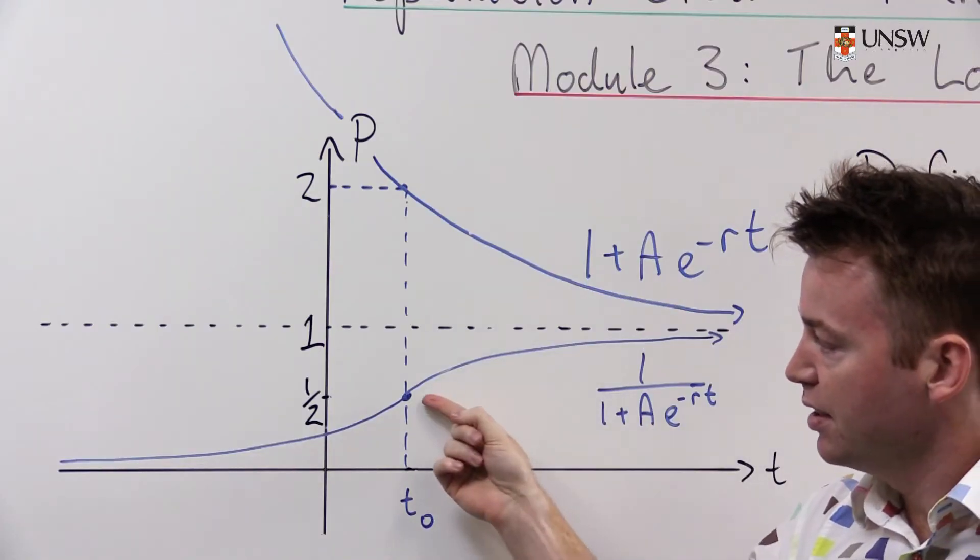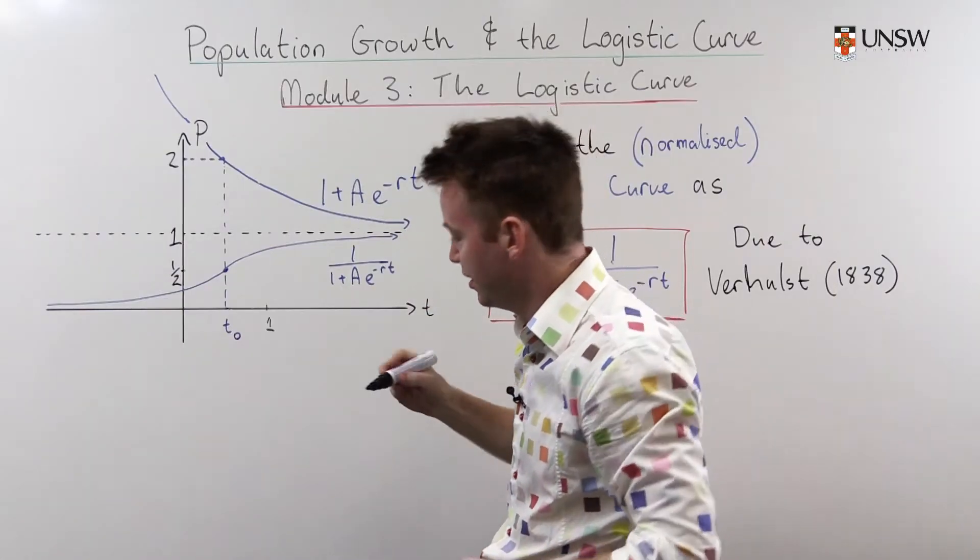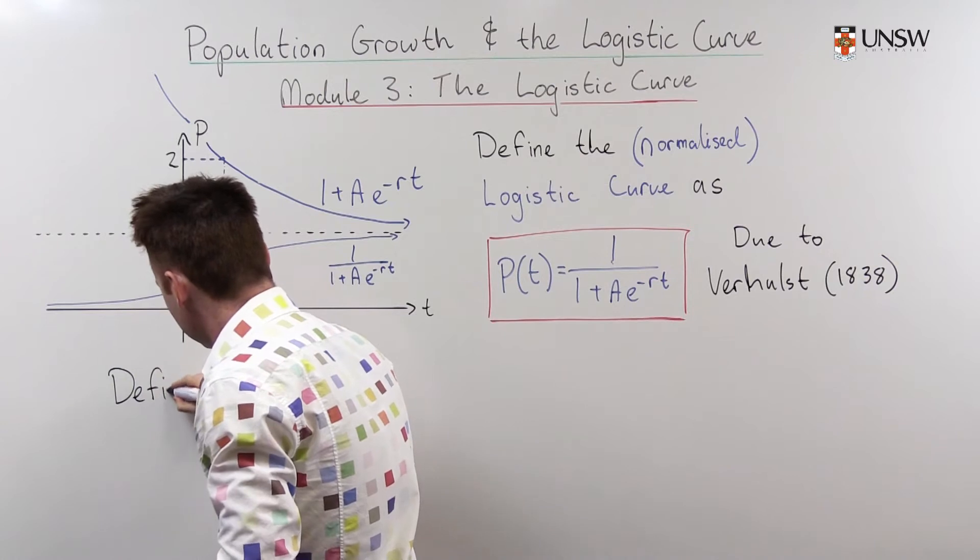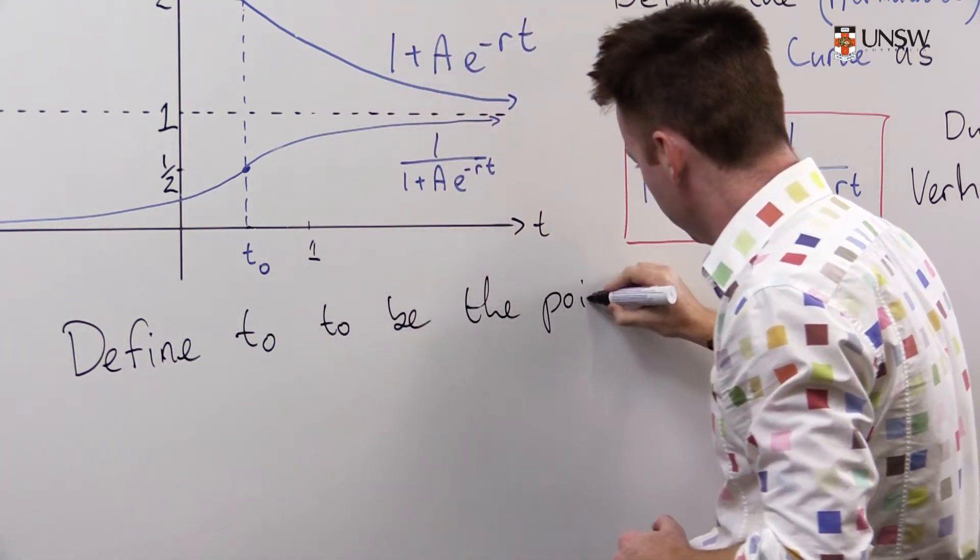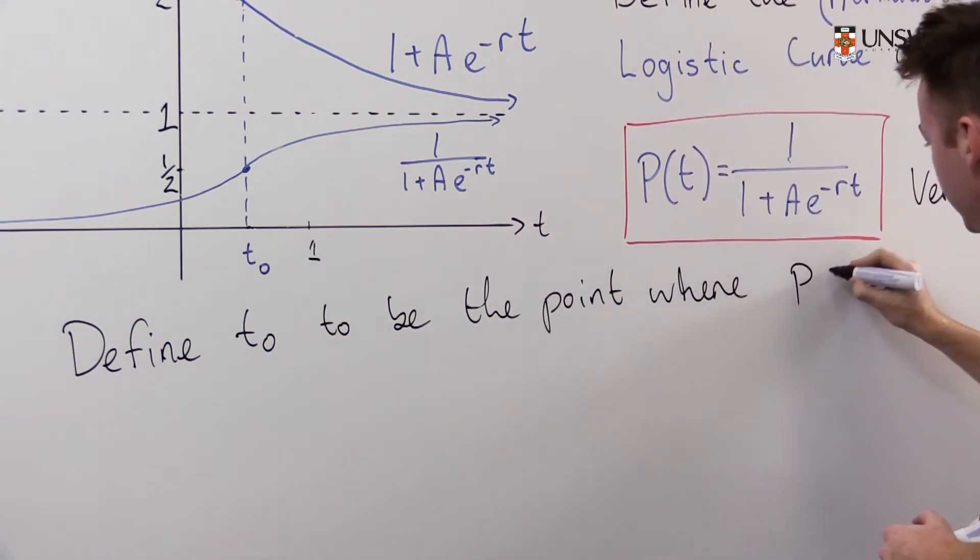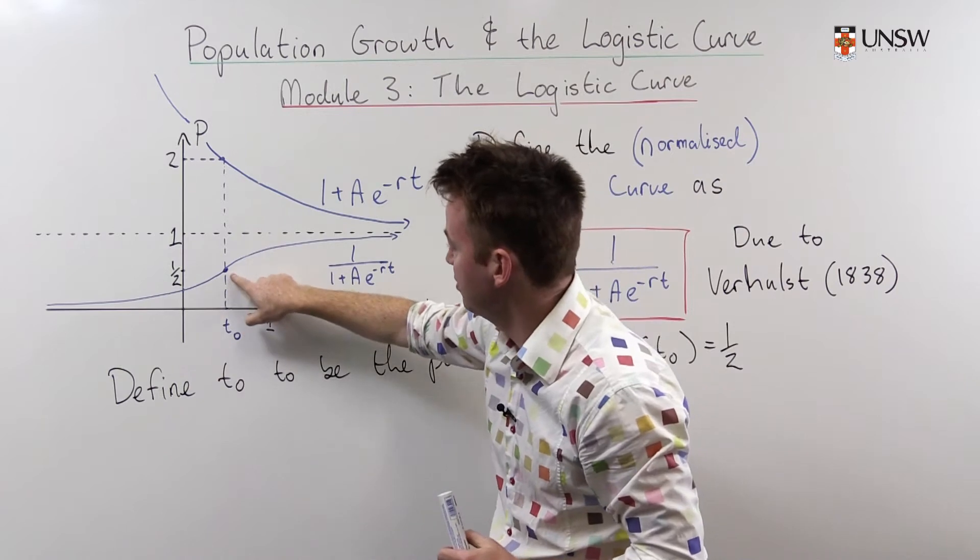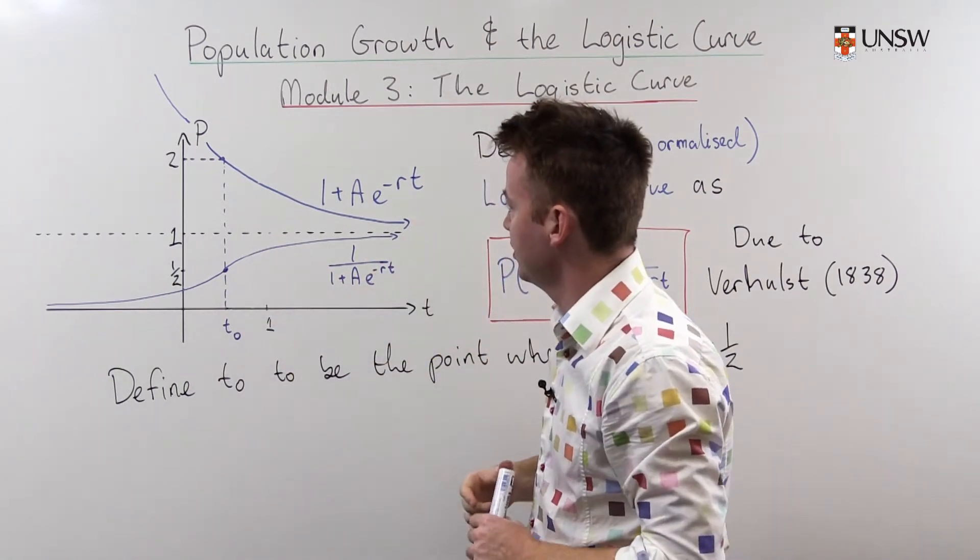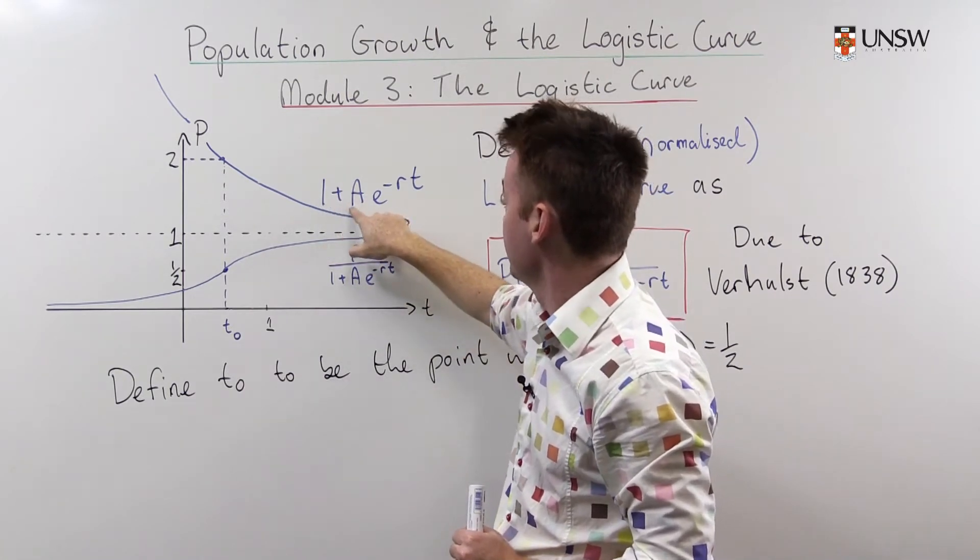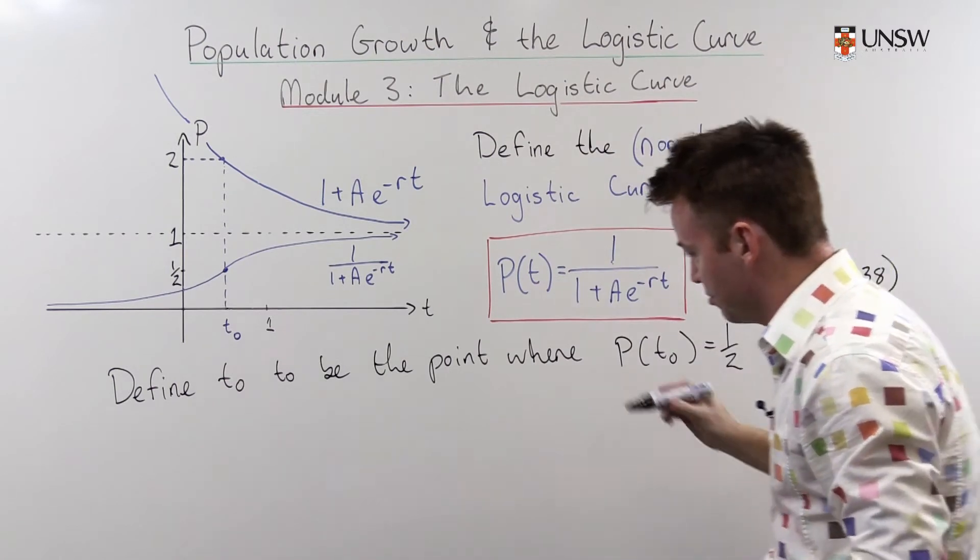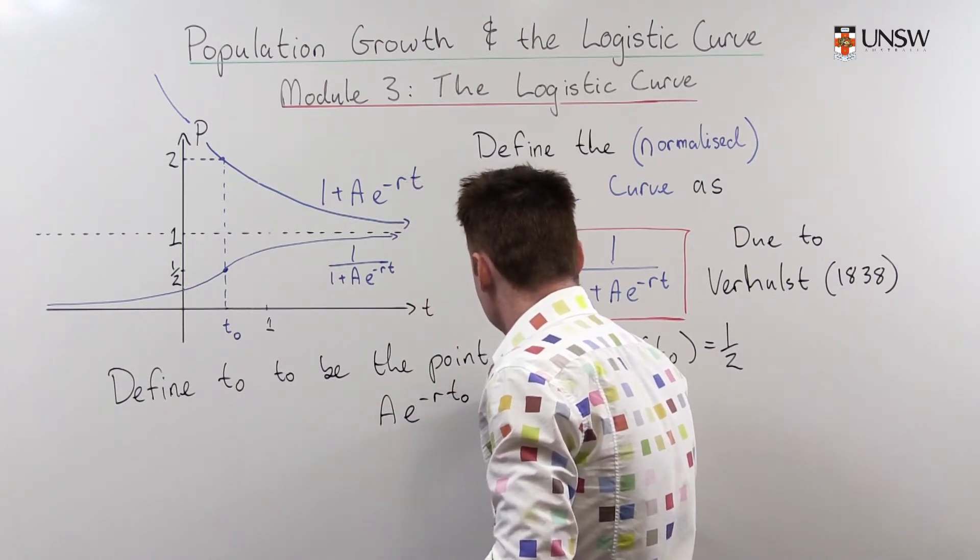Something interesting happens here at this point where population is half of the full possible population. We'll call this point the midpoint. So we'll define t0 to be where P of t0 is equal to one half. So when population is one half then this is 1 over 1 plus 1 which is 2. So this auxiliary function up here goes through the point 2 which means that this bit here, a e to the negative rt, is just equal to 1 which is an interesting fact which we will store aside for later. So a e to the negative r t0 equals 1.